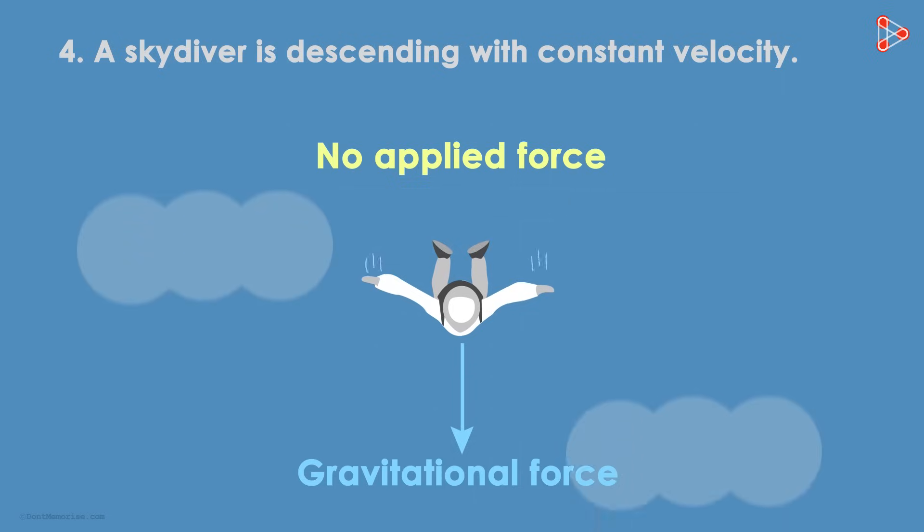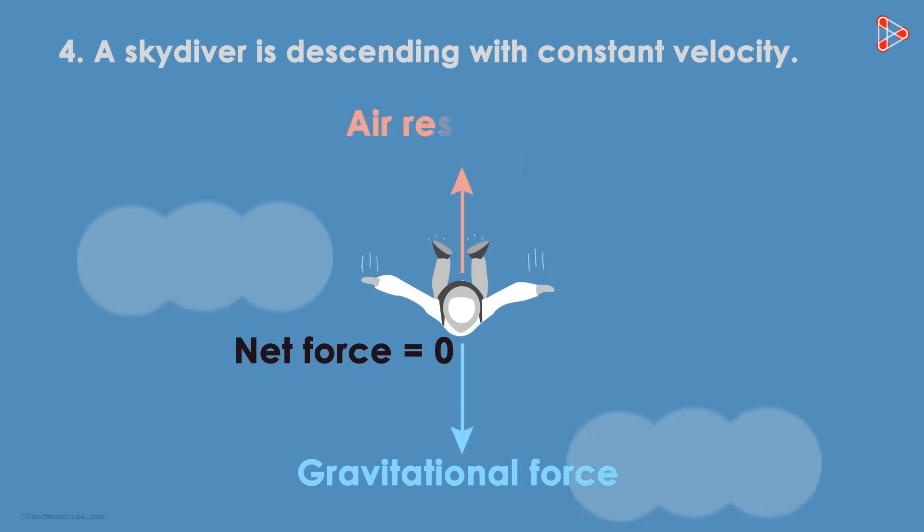And there is no applied force on the skydiver either. But as the skydiver is falling at a constant velocity, it implies that the net force must be zero. Which is the force that will net the force of gravity? Yes, it will be the air resistance. As the velocity is constant, it implies that the magnitudes of these two forces are equal. This is the free body diagram of the fourth situation.